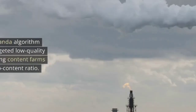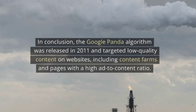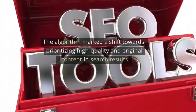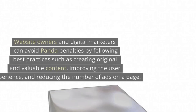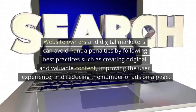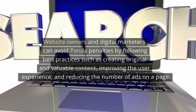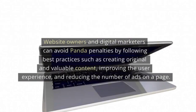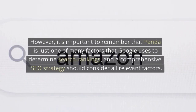In conclusion, the Google Panda algorithm was released in 2011 and targeted low-quality content on websites, including content farms and pages with a high ad-to-content ratio. The algorithm marked a shift towards prioritizing high-quality and original content in search results. Website owners and digital marketers can avoid Panda penalties by following best practices such as creating original and valuable content, improving the user experience, and reducing the number of ads on a page. However, it's important to remember that Panda is just one of many factors that Google uses to determine search rankings, and a comprehensive SEO strategy should consider all relevant factors.